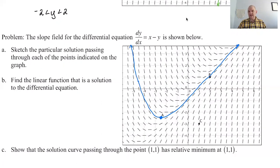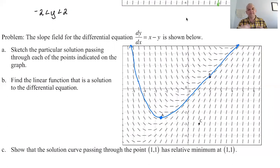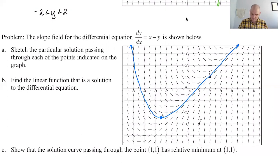One thing not to stress about: if you hit one of these line segments at exactly its midpoint, you should have the same slope there. Otherwise, everyone is just doing their best — it's not going to be perfect.